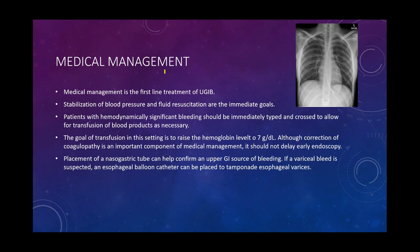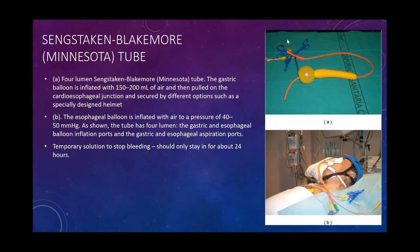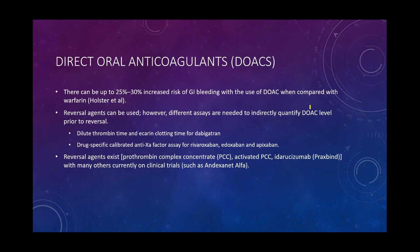If a variceal bleed is suspected, an esophageal balloon catheter can be placed to tamponade esophageal varices. A Sengstaken-Blakemore tube can be inflated within the esophagus — usually to about 150-200 mL of air — then pulled back to stabilize at the cardioesophageal junction. This is a temporary solution, and should only remain in place for about 24 hours to avoid ischemia.